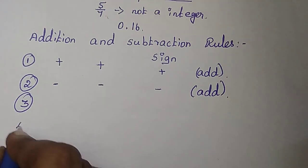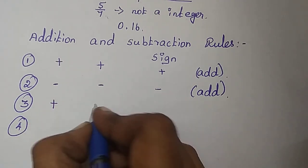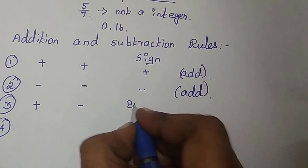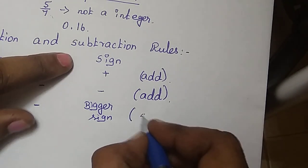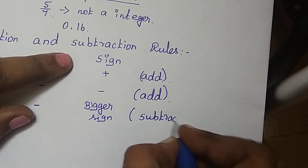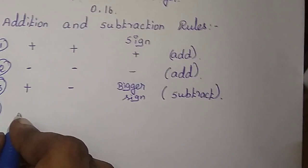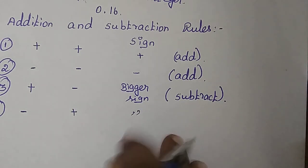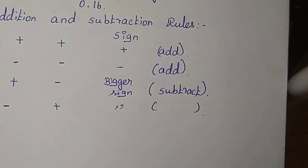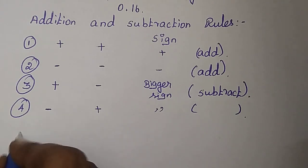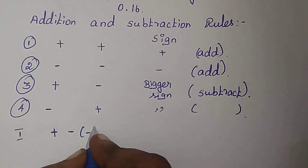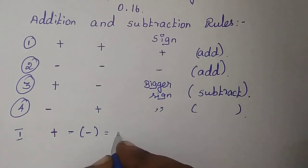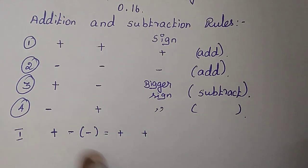Third and fourth rule: if one is positive and another one is negative, we put the bigger number's sign, then subtract the 2 numbers. Also, minus of minus gives us plus — so we add those two numbers and put the plus sign.